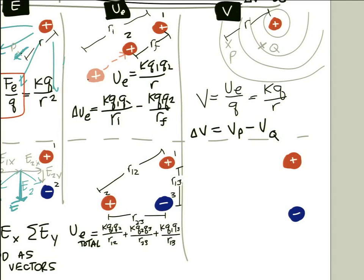An important note: R is the distance to the center of the charge. So even if two points are not along the same line from the charge, what determines their electric potential is only how far they are from the central charge. Moving along a circle of constant R doesn't change V at all — those are equipotential lines, like lines of equal altitude on a topographic map, representing equal electric potential (voltage).